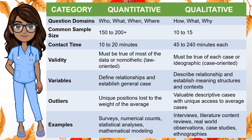For validity, quantitative research must be true of most of the data — nomothetic or law-oriented — while qualitative research must be true of each case — ideographic or case-oriented. For variables, quantitative research aims to define relationships and establish the general case, while qualitative research aims to describe relationships and establish meaning, structures, and context. For outliers, quantitative research treats them as unique positions lost to the weight of the average, while qualitative research treats them as valuable descriptive cases with unique access to average cases.